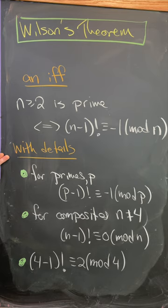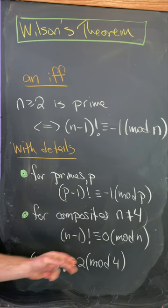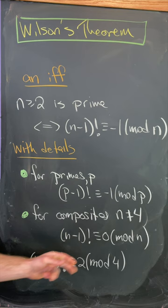But there's a version of this with all the details. So for primes p, we have the standard statement. For composites not equal to 4, n minus 1 factorial is 0 mod n. And then we've got this special case when n is 4.